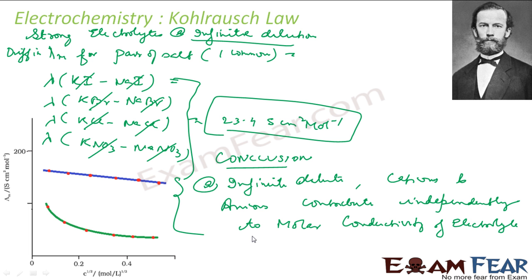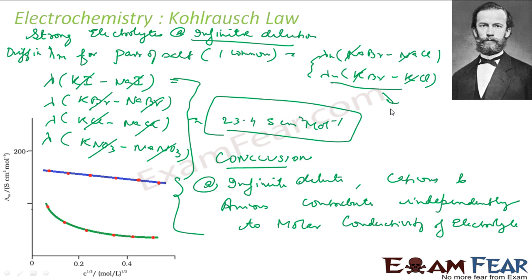He took other pairs as well — for example NaBr and NaCN, and KBr and KCl. When you find the difference in λm, Na cancels in one pair and K cancels in the other. In both cases the difference came out to be 1.8 S·cm²/mol. Thus he stated that molar conductivity can be expressed as the sum of molar conductivities of individual ions of the electrolyte, since they contribute independently.